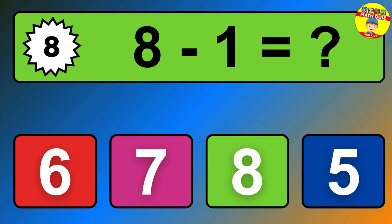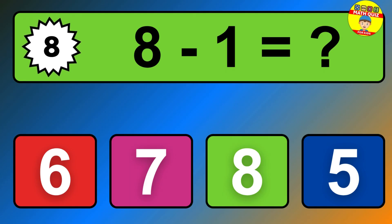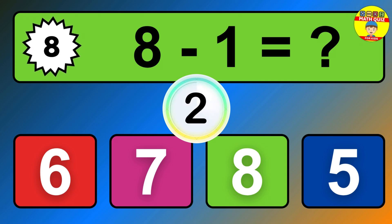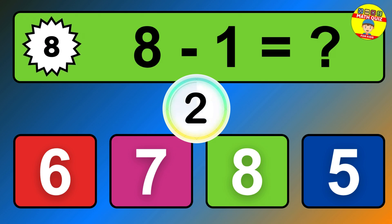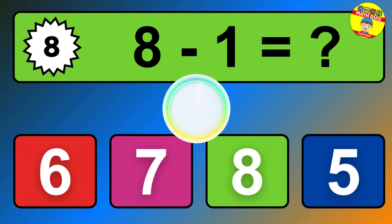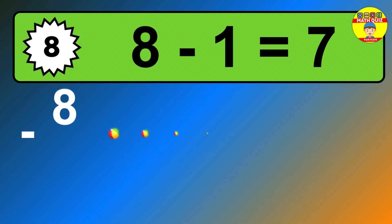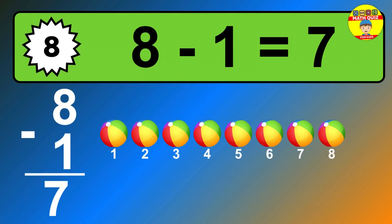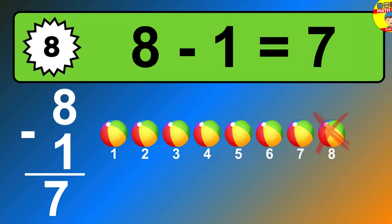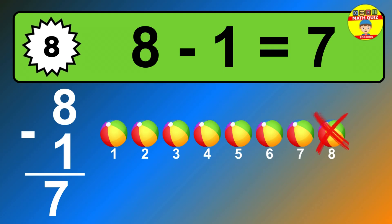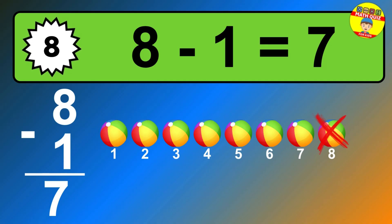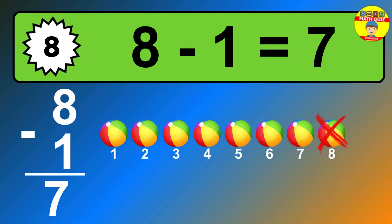Question 8. 8 minus 1 equals what? So the answer is 8 minus 1 is 7. Let's count it. 1, 2, 3, 4, 5, 6, 7.